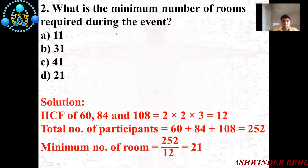The question is asking about the minimum number of rooms required during the event. We can use the formula: total number of participants divided by the highest common factor. The HCF of 60, 84, and 108 we already know is 12.